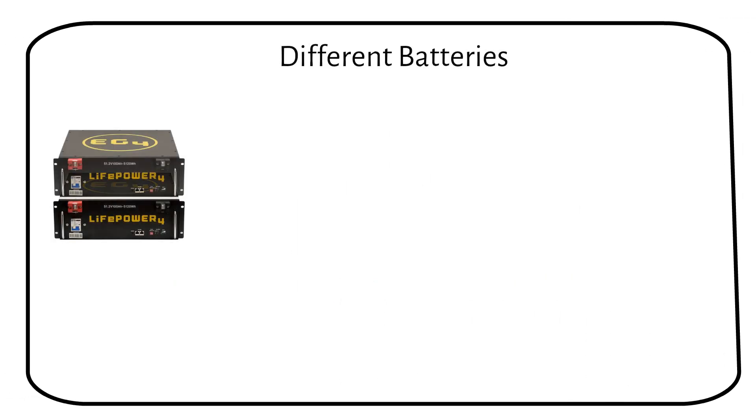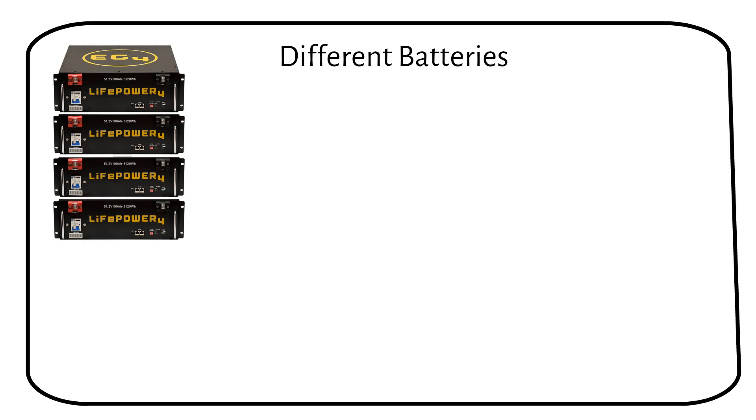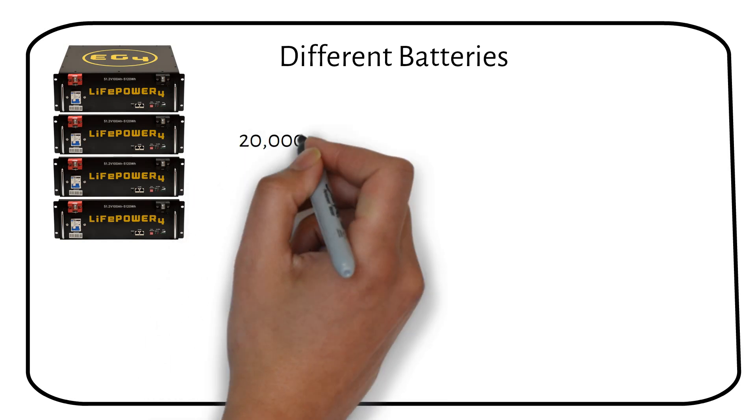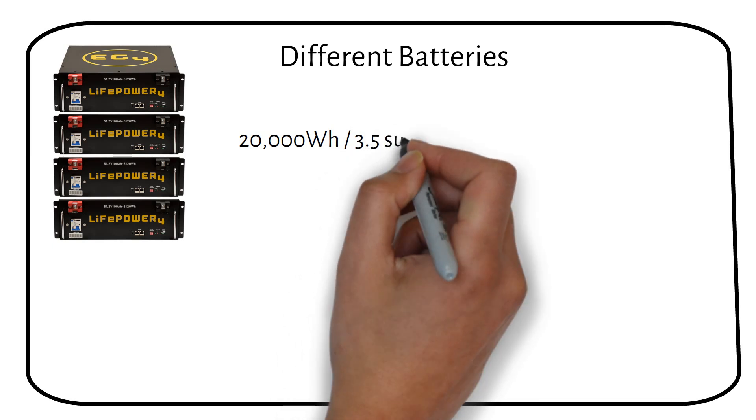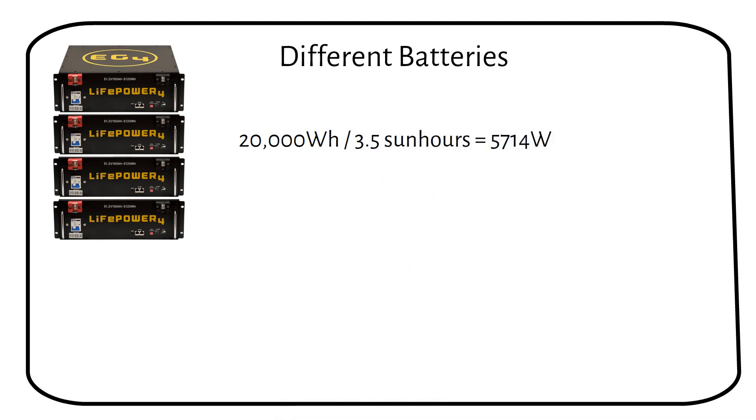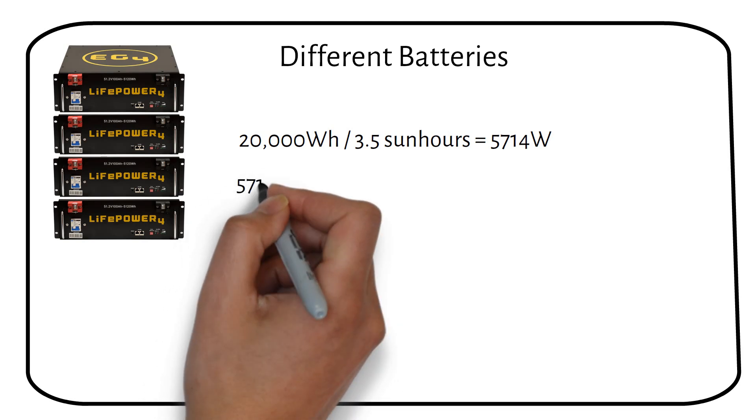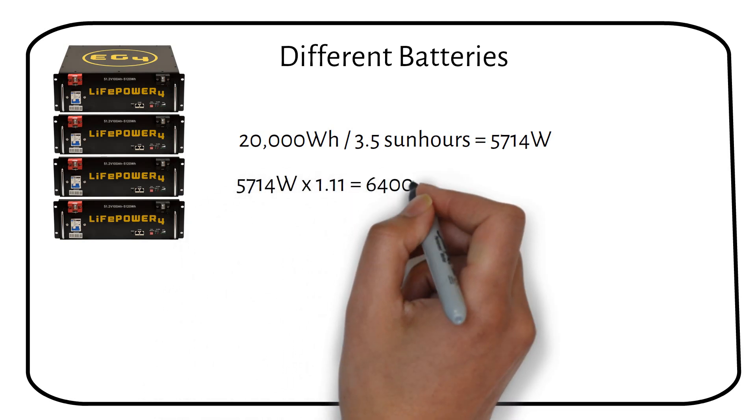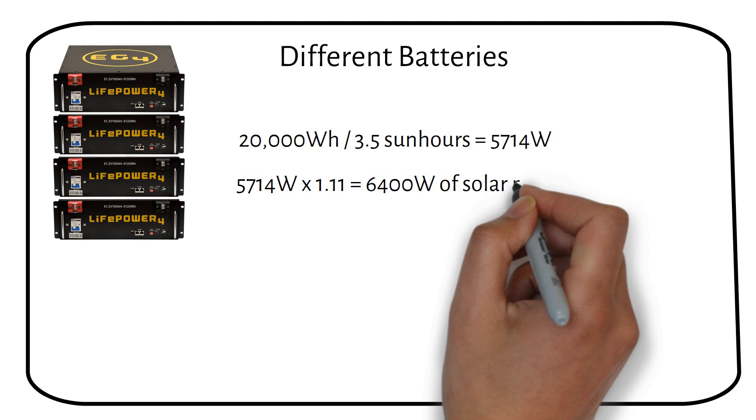Now let's calculate for different sized batteries. Let's say you have 4 server rack batteries totaling 20 kilowatt hours. To recharge this battery in one day, you need to follow the same calculation process. 20,000 watt hours divided by 3.5 sun hours equals 5,714 watts. Then multiplying by the safety factor, we get 6,400 watts of solar panels.